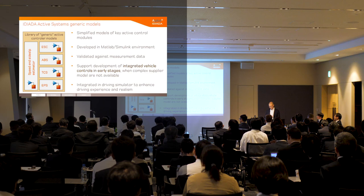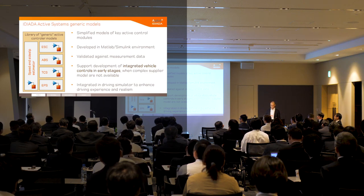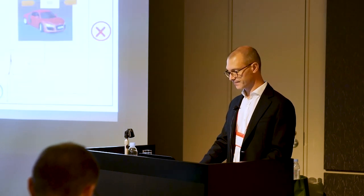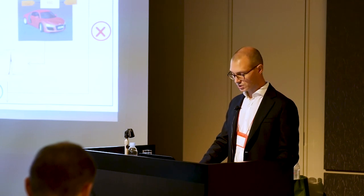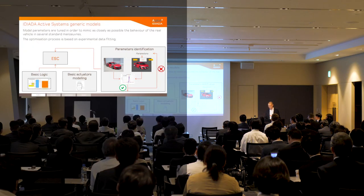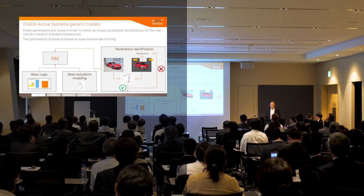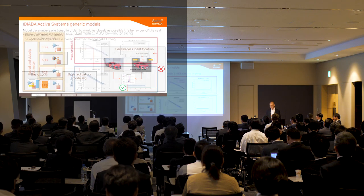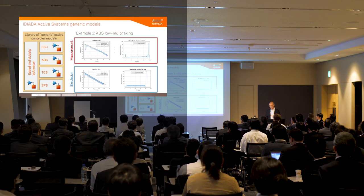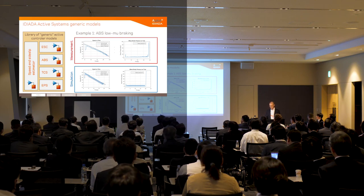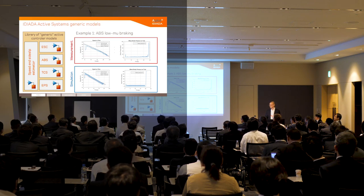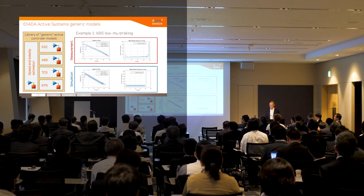We have started integration and realized some of these models already in the driving simulator, to enhance driving experience realism, which sometimes requires the systems working at some level. The systems are composed of a basic logic and basic actuator modeling. Through comparison of simulation data with measurement data, we can tune the model parameters to mimic real vehicle behavior as closely as possible. Here is an example of results for ABS low-mu braking, with measurement results on top and simulation results on the bottom. The aim is not 100% accuracy, but sufficient representativity.